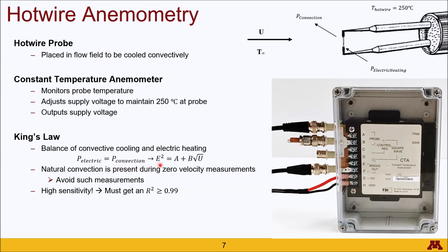This energy balance allows you to generate King's Law by equating the heating generated by electricity and the cooling from convection. After some algebra and incorporating the Nusselt number, you can get to King's Law: E² = A + B√U. An important note is that natural convection is present for zero velocity measurements, so you cannot accurately get readings in that region. Because of the relationship between voltage and velocity, there is high sensitivity, and therefore your calibration curve must have an R² of at least 0.99.